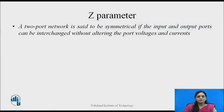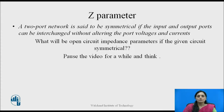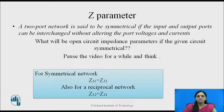A two-port network is said to be symmetrical if the input and output ports can be interchanged without altering the port voltages and currents. The condition for symmetry in terms of open circuit impedance parameters is that Z11 equals Z22. For a reciprocal network, the condition is that Z12 equals Z21.